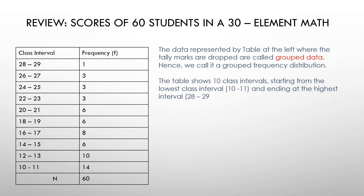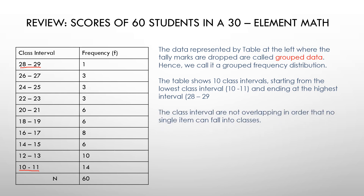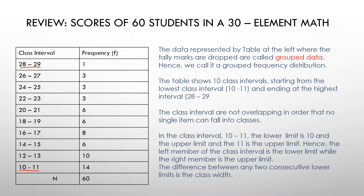The table shows class intervals starting from 10 to 11 and ending at the highest interval which is 28 to 29. The class intervals are not overlapping so that no single item can fall into two classes. In the class interval 10 to 11, the lower limit is 10 and the upper limit is 11. The left number is the lower limit while the right is the upper limit, and the difference between two consecutive lower limits is the class width.